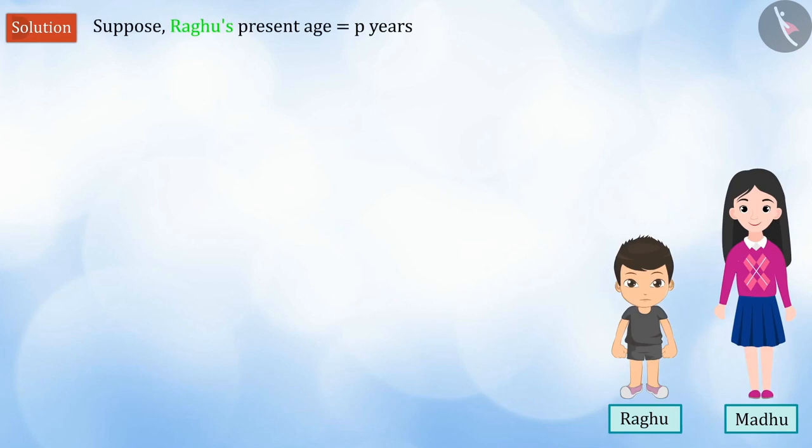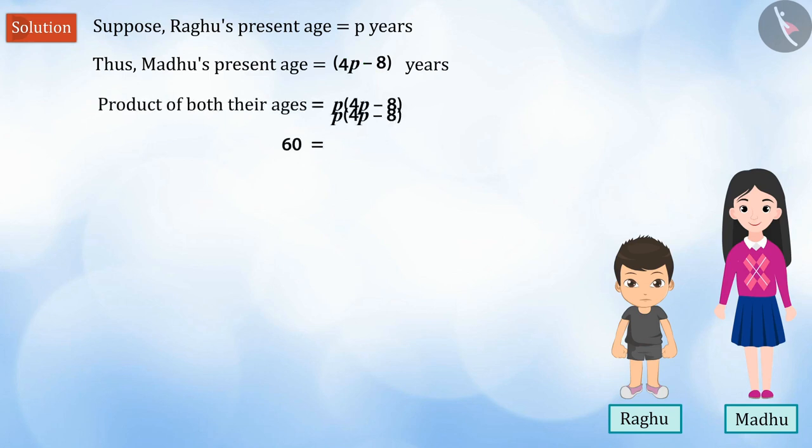Suppose Raghu's present age is equal to p years. According to the question, Madhu's age is 8 less than 4 times Raghu's present age. That is, Madhu's age will be equal to 4p - 8 years. The product of both their ages is given as 60, which we shall consider as equation 1.